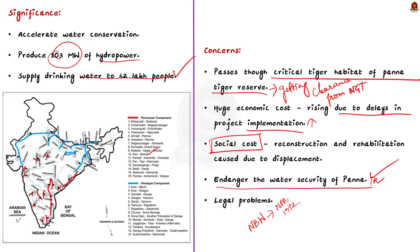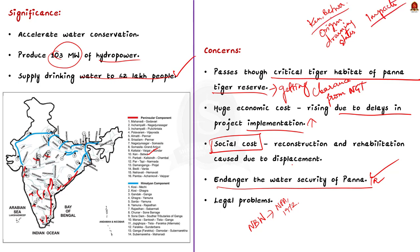If UPSC asks a question in this particular area, they might ask about the origin and draining states of the Ken and Betwa rivers. In Mains, UPSC might ask about the impacts or the positives and negatives of interlinking of rivers.